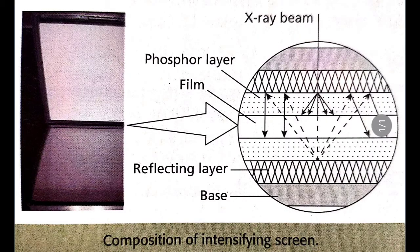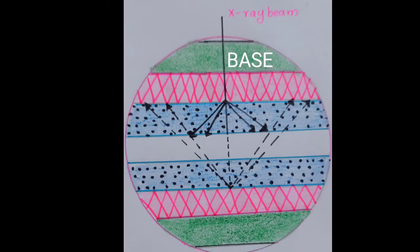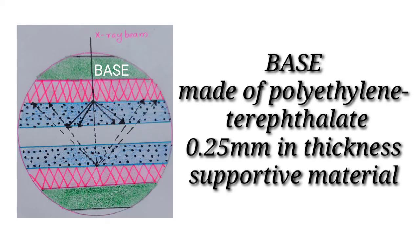Moving on to the composition of intensifying screens, there are four principal components: the base, the reflecting layer, the phosphor layer, and the coat. The base of the intensifying screen is made of the same material as that of an intraoral film — polyethylene terephthalate — and is 0.25 millimeters in thickness, acting as a supportive material.